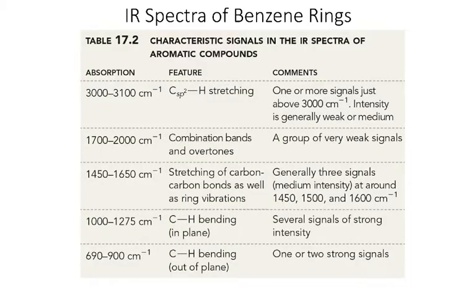First, let's talk about IR spectroscopy. The region around 3,000 wavenumbers tells us about C-H stretches. If we're less than 3,000 wavenumbers, those are typically sp3 carbon C-H stretches. If we're at about 3,100 wavenumbers, those are sp2 hybridized carbon C-H stretches. Since benzene only has sp2 hybridized carbons, any C-H stretches we'd expect to see around 3,100 wavenumbers.